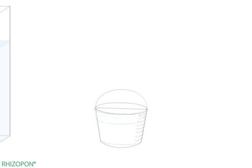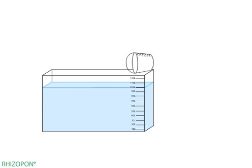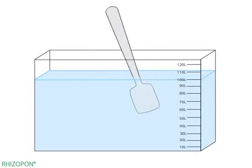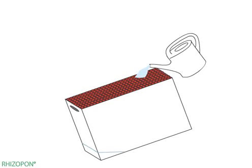Pour the Rhizopon rooting solution back from the 6-liter bucket into the large mixing container to bring the solution back to the original 100 liters. Mix the solution thoroughly. Pour the rooting solution into the treatment tank.